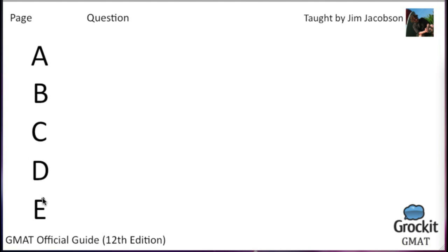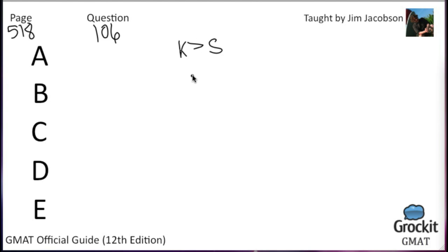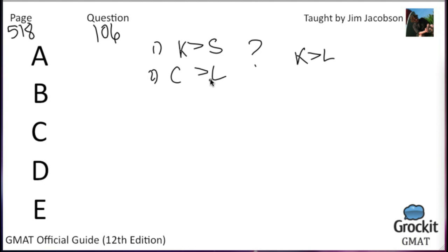Turn the page to 518, question 106. Kale has more nutritional value than spinach. But since collard greens have more nutritional value than lettuce, it follows that kale has more nutritional value than lettuce. Any of the following, if introduced as an additional premise, would make the argument logically correct — except. We know: kale (K) > spinach (S), collard greens (C) > lettuce (L). We need to logically establish K > L. Four of five answer choices will do that; we're looking for the one that doesn't.